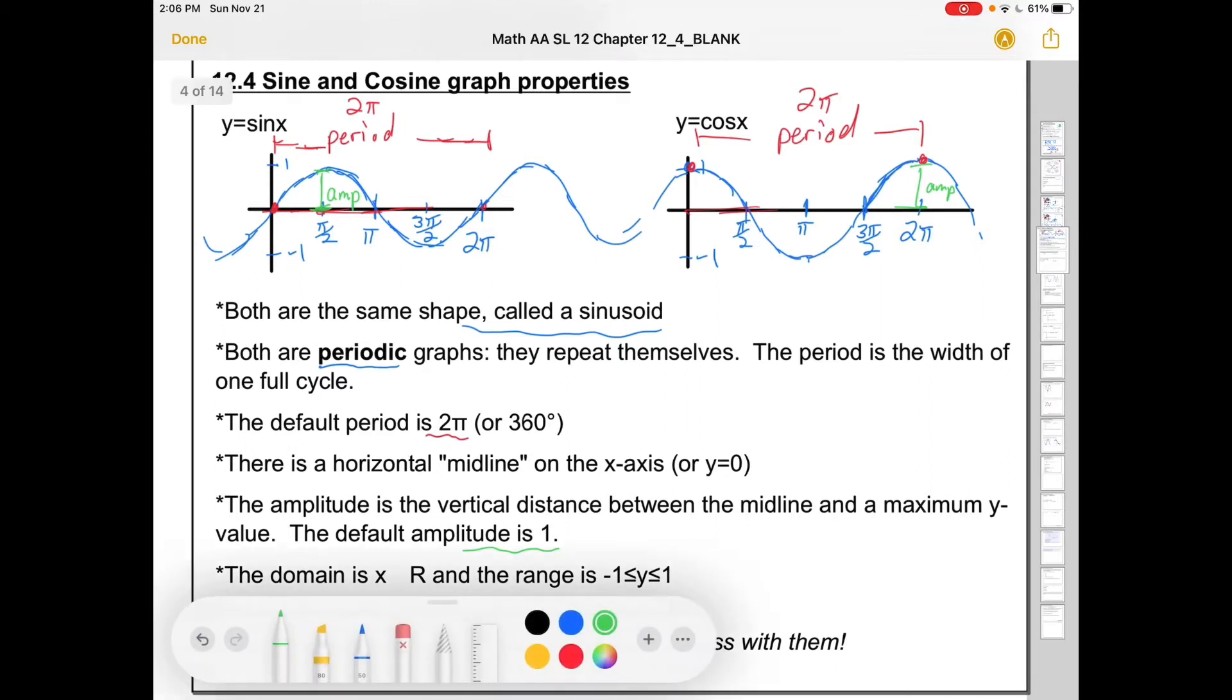And that makes sense because the furthest that's on the unit circle that you can get away from the origin is 1. The domain is x, and it should say ε R here. So it's all real numbers. These graphs continue forever and ever and ever. The range, though, is restricted to negative 1 to 1. So that's the basic look of each graph.